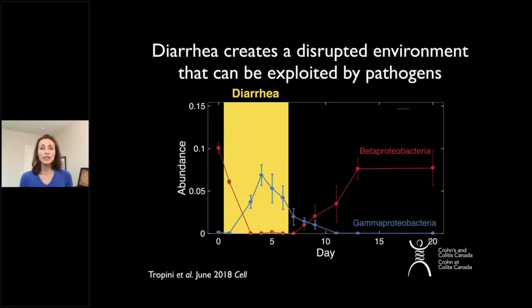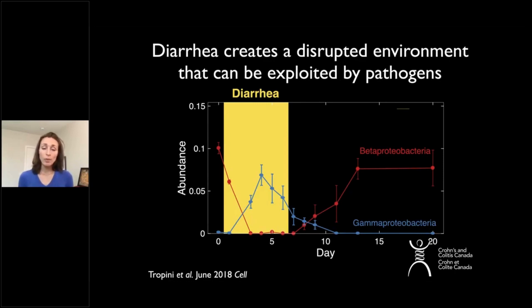What we find is that diarrhea creates a disrupted environment that can be exploited by pathogens. Pathogens are trying their hardest to survive, and what makes them better than neutral or good microbes is that they are really good at surviving in stress conditions — which is why it is so hard to get rid of them.